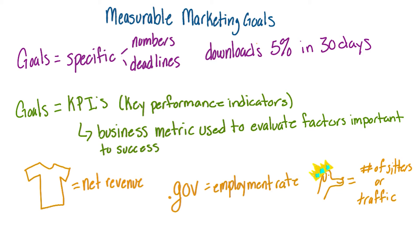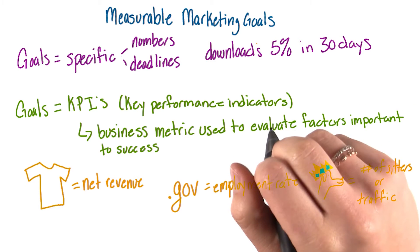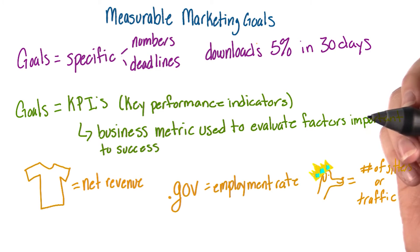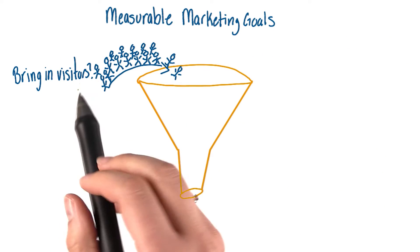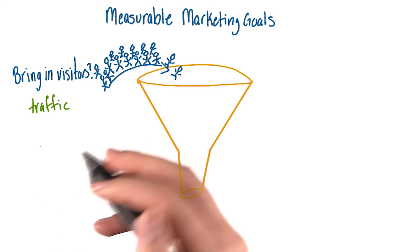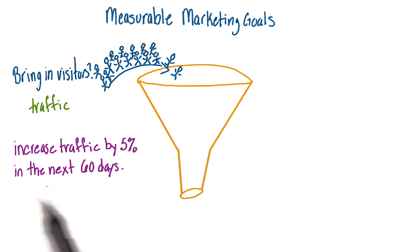So to choose these goals, you'll want to start thinking about the stage of the funnel you want to improve on. Is your goal to bring in more visitors? Here, you're going to want to consider traffic. So your goal could be to increase traffic by 5% in the next 60 days.